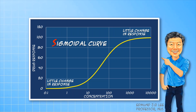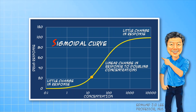In the middle of the sigmoidal curve, however, you will see that the response is quite linear in response to exponential changes in concentrations. This part of the curve is very important as many drugs are developed to exploit this straight part of the curve.